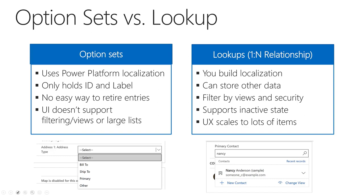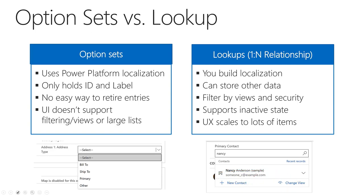Lookups use related entities, so you can store other data on that entity too — like showing the email address on a contact record, which has many more data fields. That allows you to provide contextual data as the person is selecting the related record. You can use views to filter these out and you also get type-ahead, which will help them select the available records that match what the person's typing. However, because these are entities and data fields on a record, you aren't able to use localization structure to localize these — so if you need these labels to be localized, you'll need to handle that in a different way yourself.